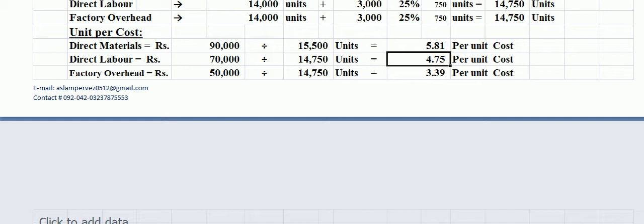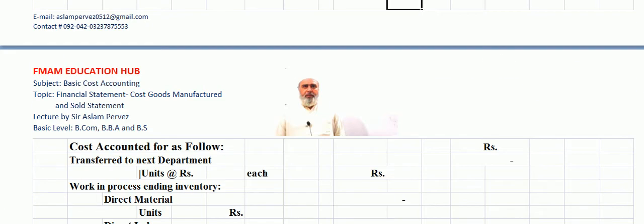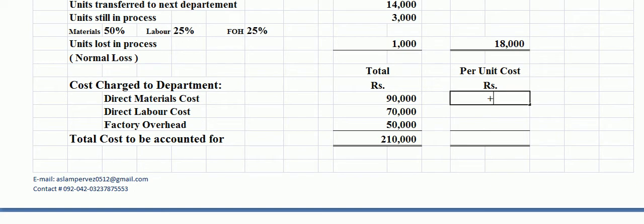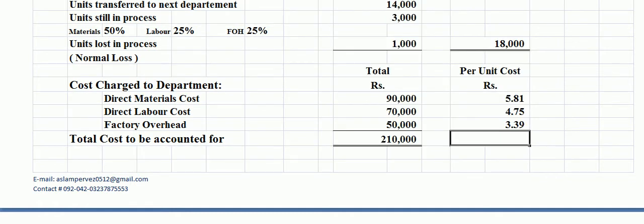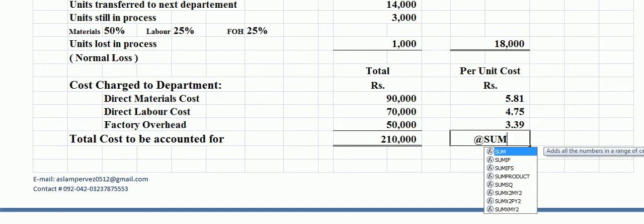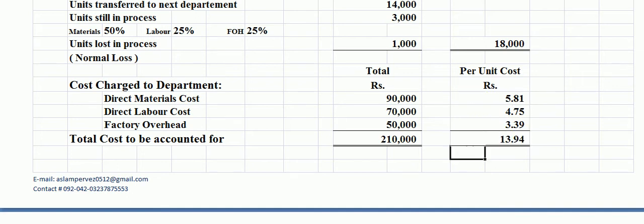We call these per unit costs K38, K39, and K40 respectively for direct material, direct labor, and factory overhead. Applying the sum formula, the total per unit cost is found by adding these five cost components — the technical costs — to arrive at the total cost per unit.